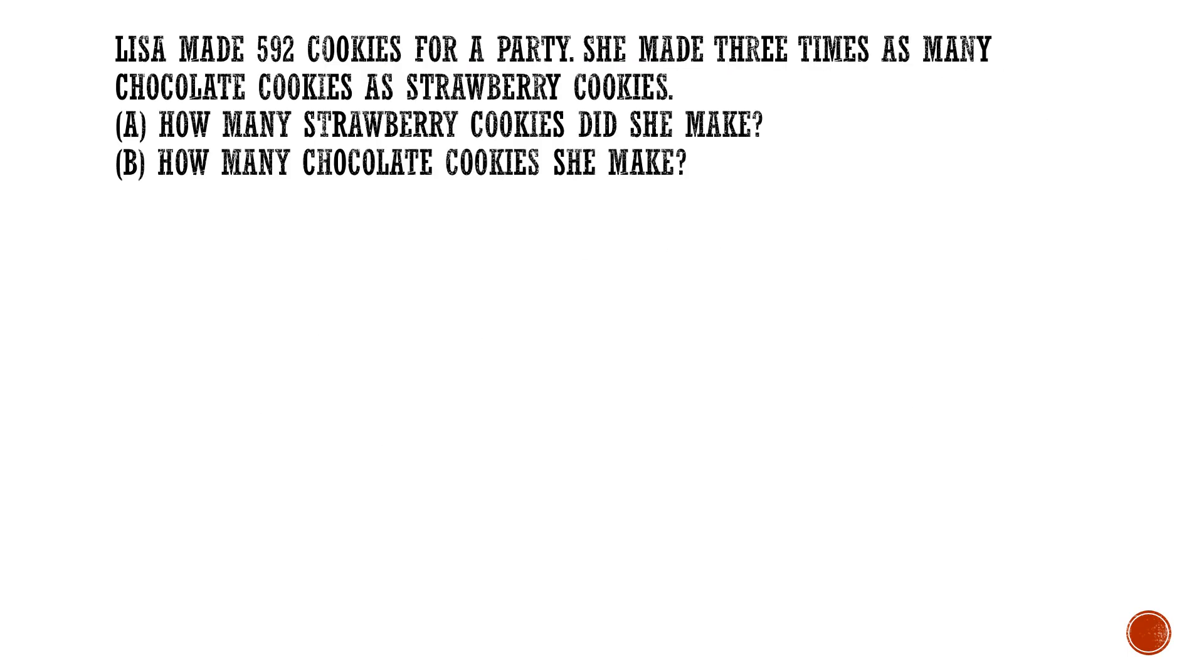Now the third question, this one is actually a similar question to the heuristics. I just basically changed the numbers. Lisa made 592 cookies for a party. This is a given total. She made 3 times as many chocolate cookies as strawberry cookies. Now there are two variables here. First question you've got to ask yourself is, between the chocolate and the strawberry cookies, which one has more? Based on the first two lines, we know that there are more chocolate cookies than strawberry cookies. Now for part A, we have to draw a model.